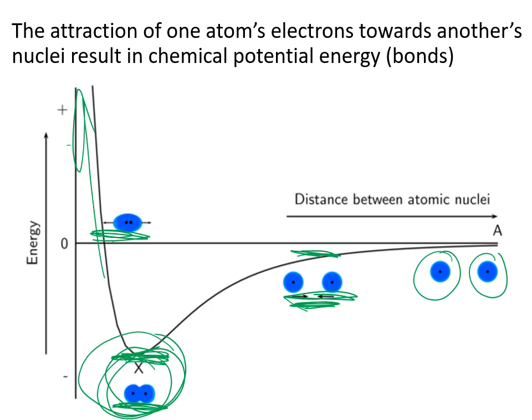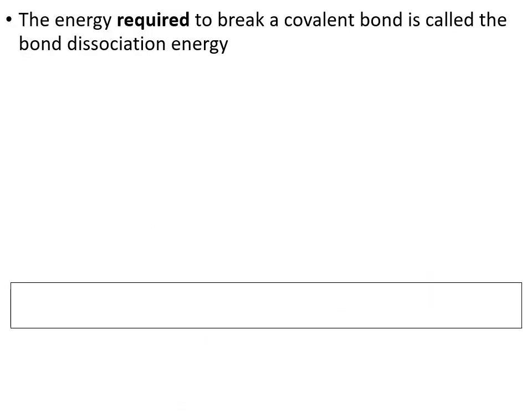When atoms form bonds, there is always a release of energy. If you want to go the other way and break that bond to separate those atoms again, you have to put energy in. We can do an approximate calculation for the energy required to break covalent bonds — this is called the bond dissociation energy: the energy required to break a covalent bond.